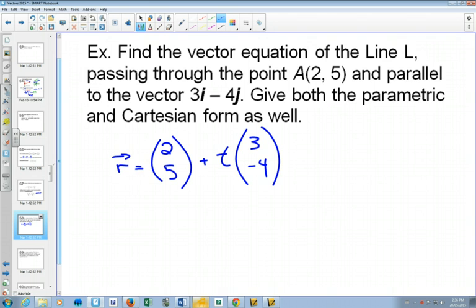So this is our vector equation of the line. R is vector. T doesn't get the vector thing over because it's just a parameter. Now, if you wanted to write your parametric forms, that's looking at your x-coordinates. Your x-coordinates will be 2 plus 3t. And your y-coordinate will be 5 minus 4t.